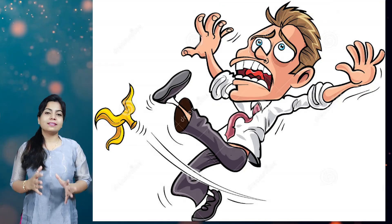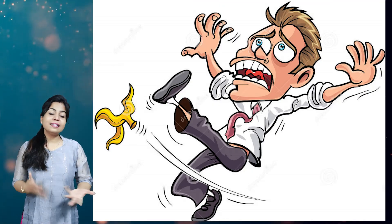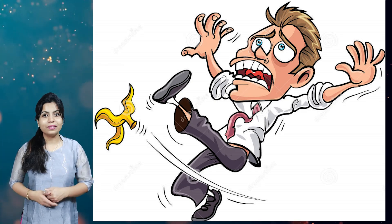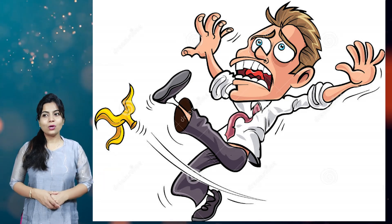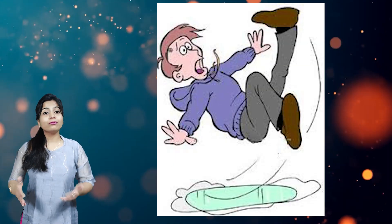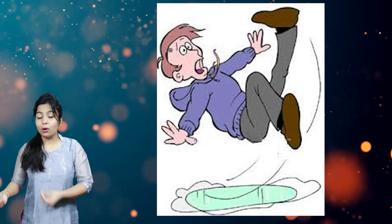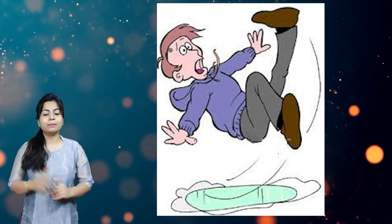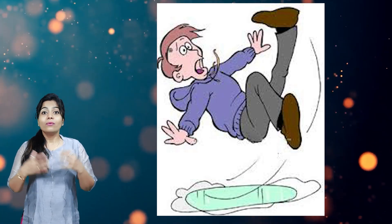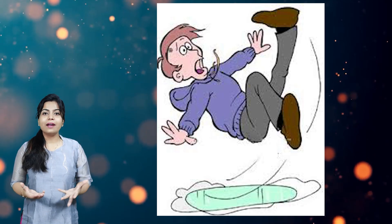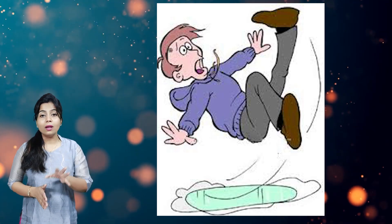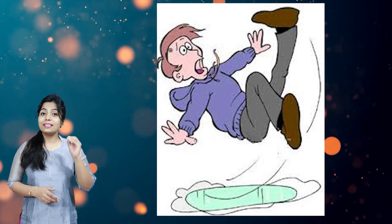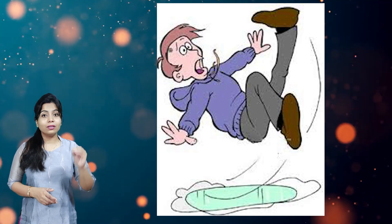I will explain. For example, if you accidentally come in contact with a banana peel, you will fall down. Or if you come in contact with oil or water on the ground, you will slip. The reason is that banana peel and oil reduce friction. So friction is needed for walking.